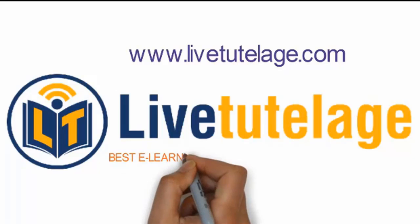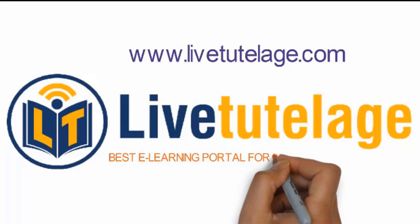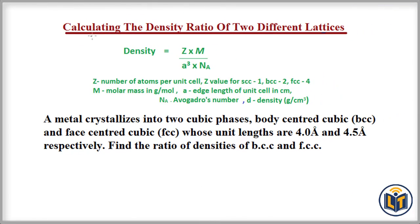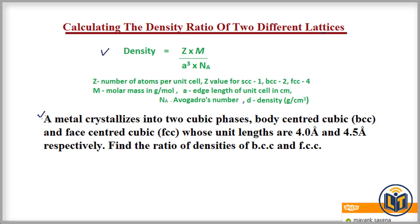Welcome to livetoplace.com, best e-learning portal for IIT JEE and foundation. In this video I will discuss how to calculate the density ratio of two different lattices. The density formula is: density equals Z multiplied by M, upon a-cubed (the volume of the unit cell) multiplied by Avogadro's number. We need this formula to solve this problem.